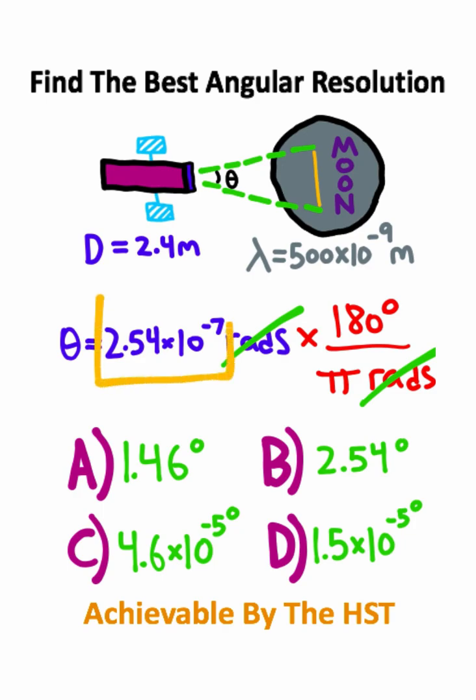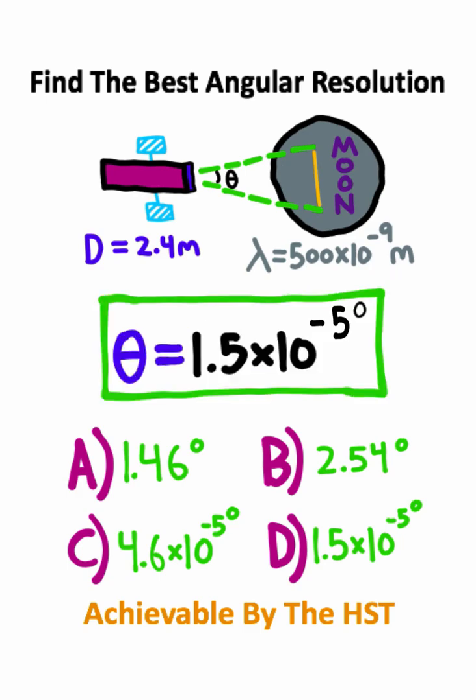So we'll end up having 2.54 times 10 to the negative 7th multiplied by 180 divided by pi. If you plug that into your calculator, you should get a value of 1.5 times 10 to the negative 5 degrees, and this matches with option D.